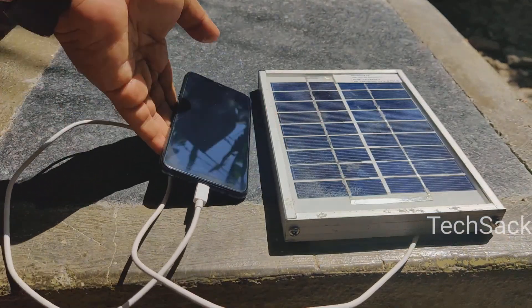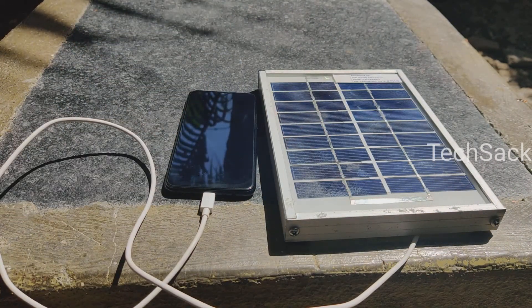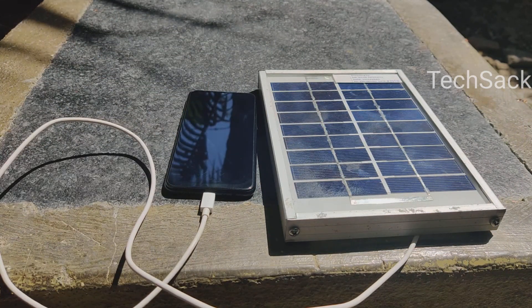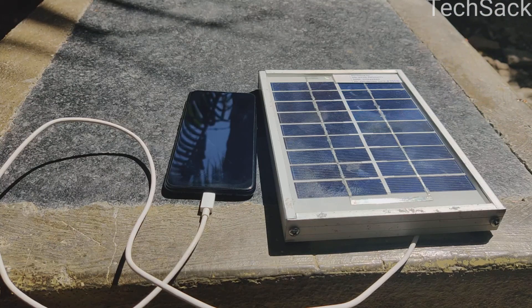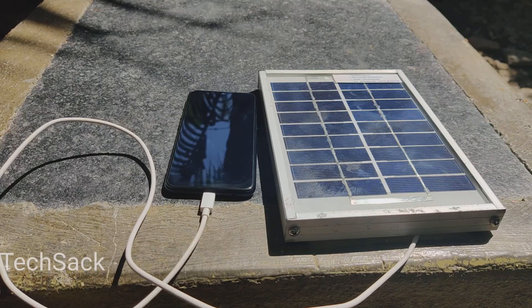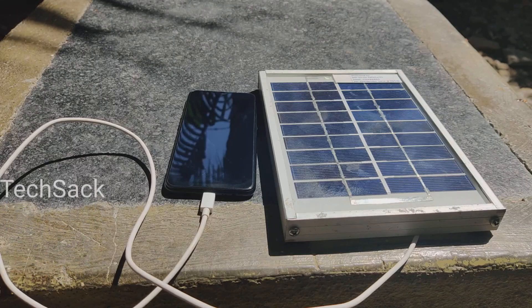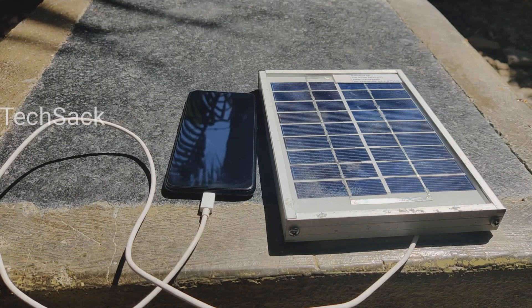So this is how the whole setup looks like. And the USB solar charger is able to charge our phone. However, this is a very low power charger and is able to deliver only 2.5 watt of power.